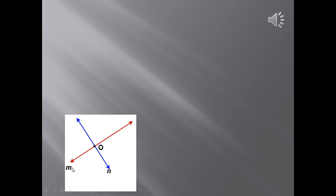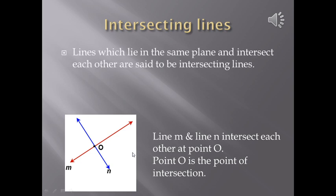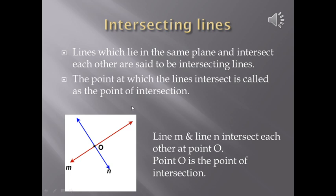Observe this figure now. In this figure, you have got line M and line N which intersect each other. That means they meet each other at point O. Point O is the point of intersection. Such lines are called intersecting lines. Lines which lie in the same plane and intersect each other are said to be intersecting lines and the point at which these lines intersect is called as the point of intersection.